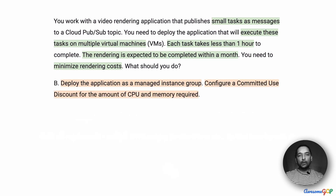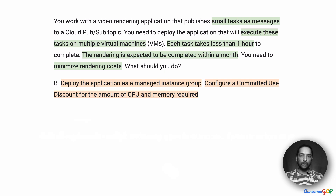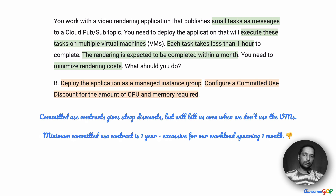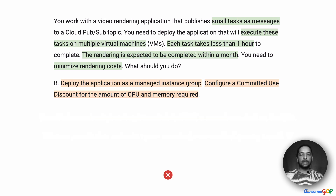Option B suggests deploying the application as a managed instance group, similar to the previous option, but additionally configuring a committed use discount for the amount of CPU and memory required. This would be fairly good if we knew we'd be using all those VMs for at least a year, because a committed use contract is one or three years. Since we are using it only for a month, entering a committed use discount contract would be extremely wasteful — for the remaining 11 months we'd be paying for nothing. So option B does not work and we eliminate it.